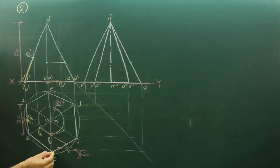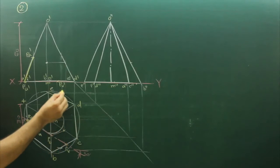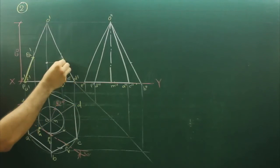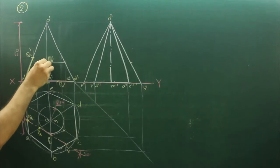So PV from here we will draw parallel to base, till here, till OC, from here we will go till O prime C prime and from there we will draw horizontal line. So this is PV prime. Join the points.